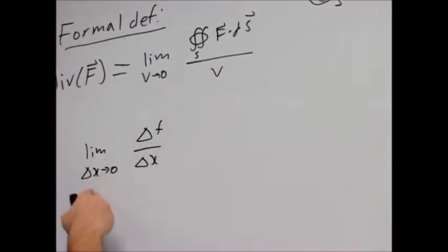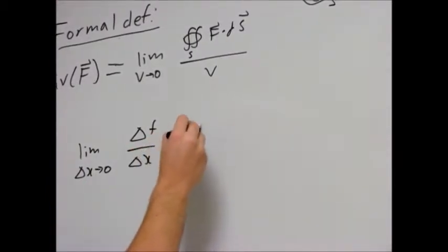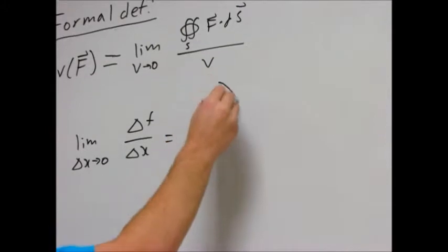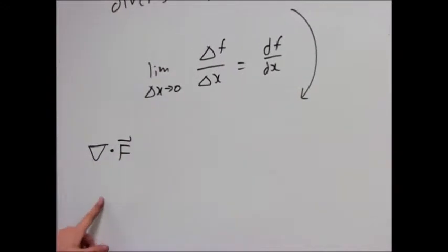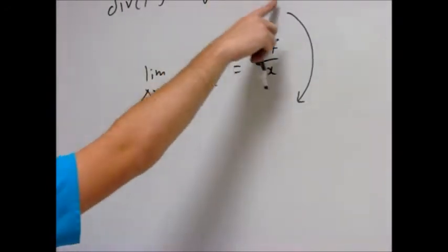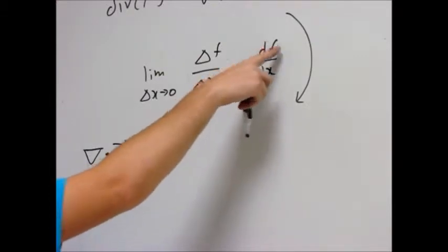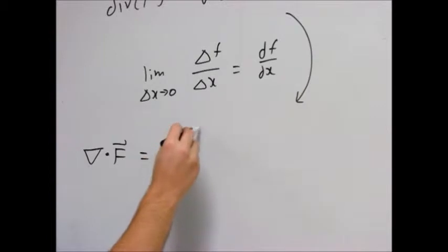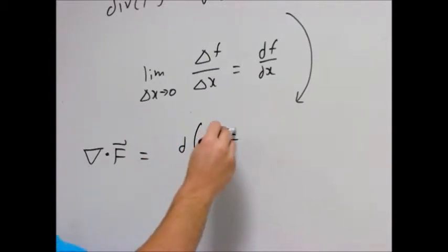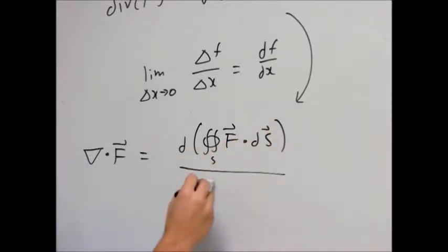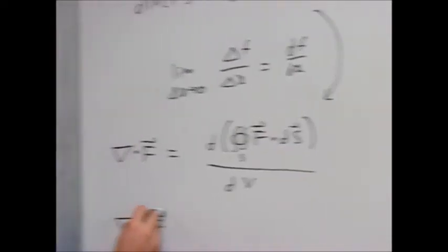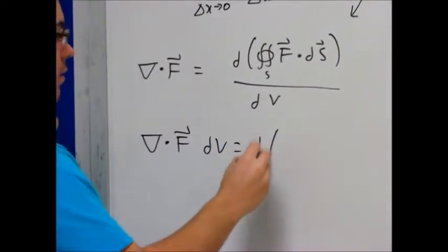The change in F over change in x as delta x goes to zero is the derivative with respect to x. By analogy, I'm going to say the divergence of F is another way of writing this — it's the same thing, except instead of dF it's d of the flux integral, and on the bottom it's dV. And of course when we solve this, we get the divergence of F times dV equals d of the flux.